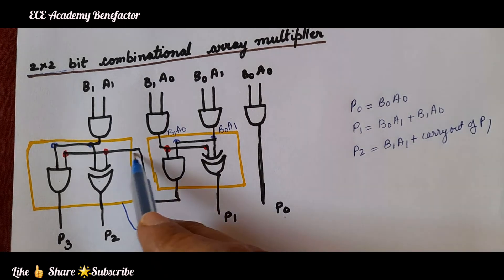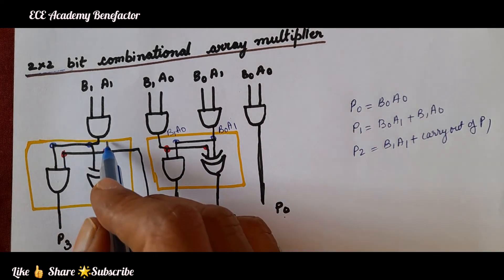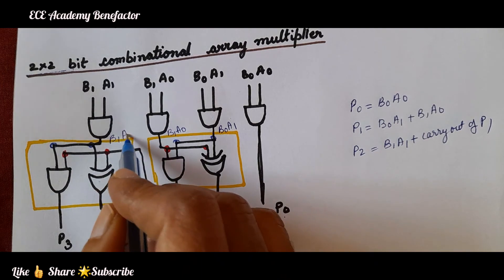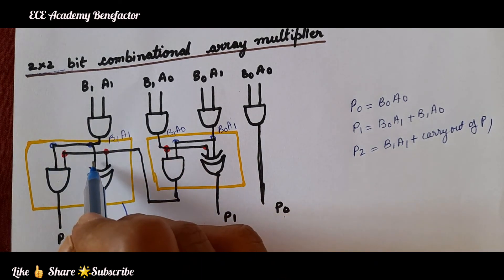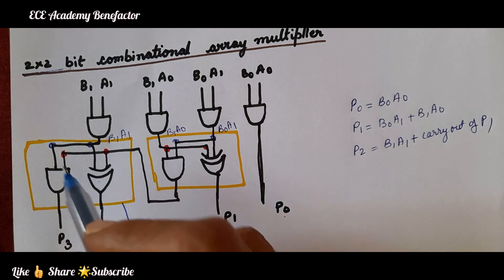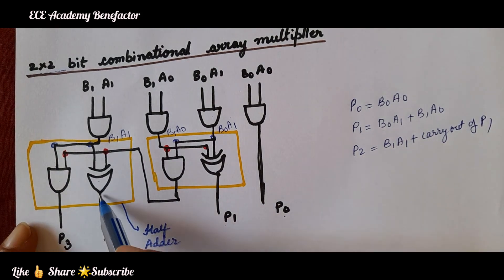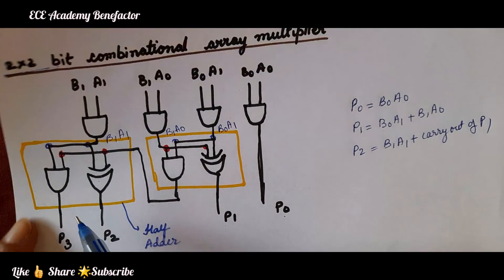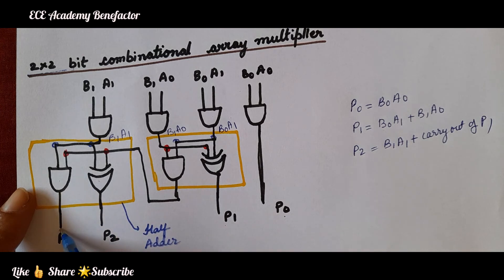This carry out of p1 is coming to both the gates, XOR gate and AND gate. The sum is generated as p2 and the next carry is p3.